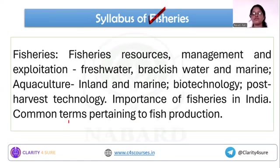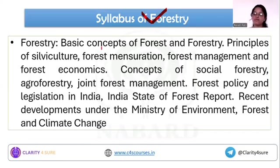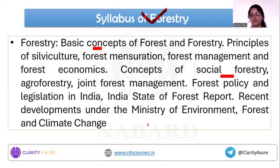For Fisheries, there are different common terms pertaining to fish production and classification like fresh water, brackish water, potadromous, and anadromous. For Forestry, basic concepts, definitions, terminologies, and different concepts like social forestry, agroforestry, recreational forestry, community and extension forestry are important. The latest 2023 forestry report has been released, so that becomes important for the next cycle.